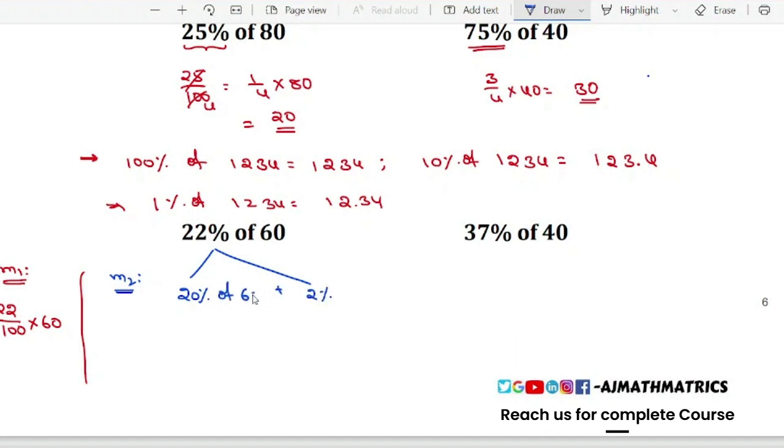What is 20 percentage of 60? We can remove the two zeros, so 2 times 6 is 12, plus 2% of 60.